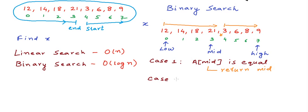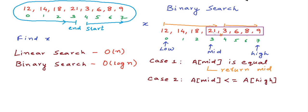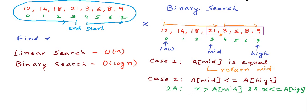Case two: if a[mid] <= a[high], then the right half from mid to high is sorted. We then have two sub-conditions: if x > a[mid] and x <= a[high], then x definitely lies in this sorted right half, so we set low = mid + 1. Otherwise, we know x is not in the right half, so we search the left half — which may be unsorted — by adjusting high to some other bound.